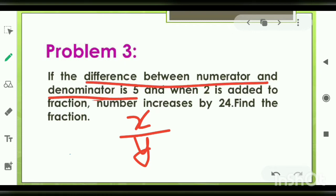In order to form the second equation, you have one more information provided in the question. When 2 is added to the fraction, number is increasing by 24. We have two information with which we are going to form the two equations and solve for the two unknown variables.